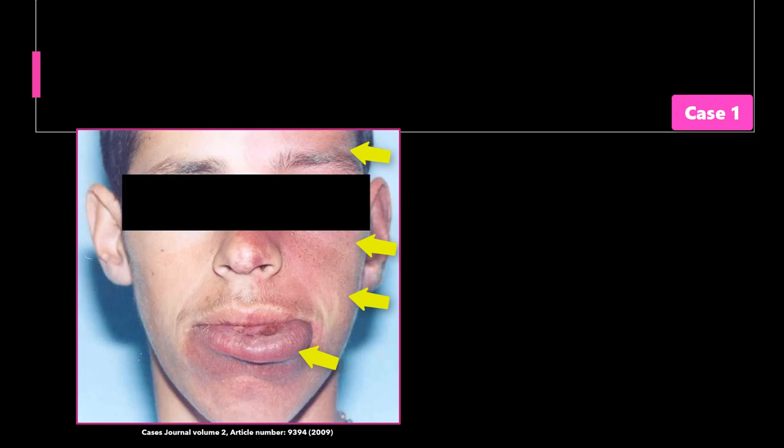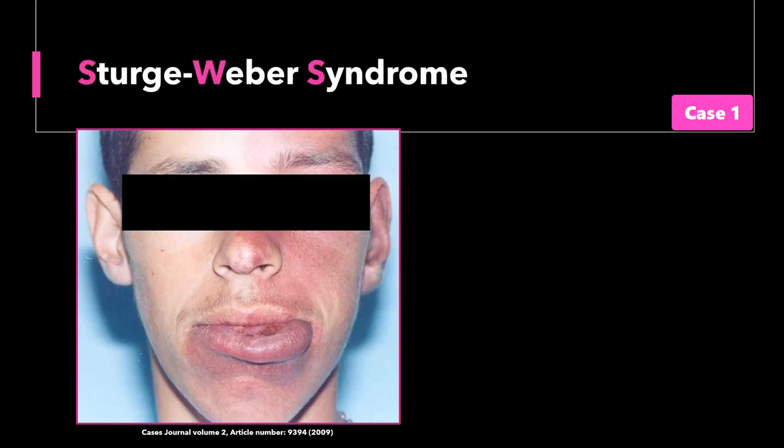The diagnosis for this is Sturge-Weber syndrome, a neurocutaneous disorder characterized by facial capillary or venous malformations in the distribution of the trigeminal nerve. These may extend into the brain tissue, leading to learning disabilities, behavioral disabilities, migraine-type headaches, and seizures. They may also extend to involve the orbital structures of the eye and manifest early as symptoms of glaucoma.